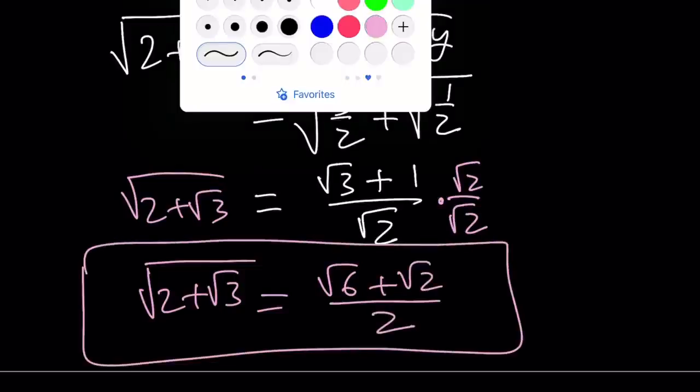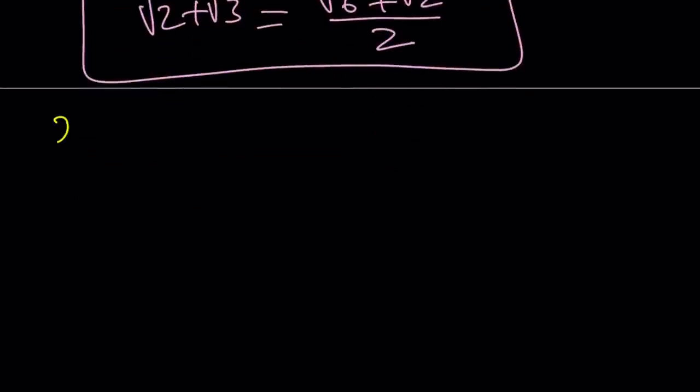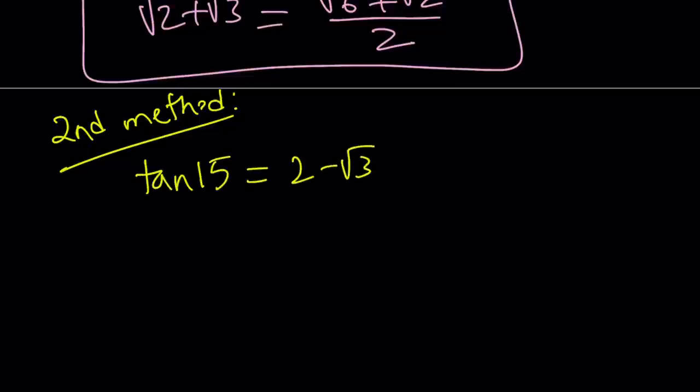Let's go ahead and talk about the second method now. And let's see if you already have an idea. Second method. For my second method, any guesses? Let's see. I'm going to be using trigonometry. I know you guys, some of you are probably thinking like, where does trigonometry come from? Well, I'm hoping that some of you at least are familiar with the fact that tangent 15 is equal to 2 minus root 3. And tangent 75 is just 2 plus root 3.